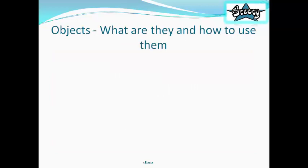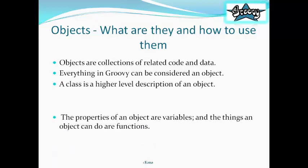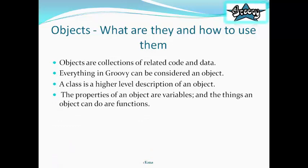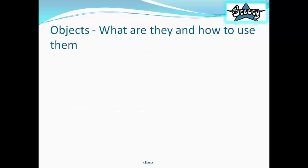Objects. What are they and how to use them? Objects are collections of related code and data. Everything in groovy can be considered an object. A class is at a higher level description of an object. The properties of an object are the variables and the things an object can do are its functions. Object-oriented programming allows us to take all of the variables and functions out of the main program and store them inside an object. For example, a car object that we see in the next slide.